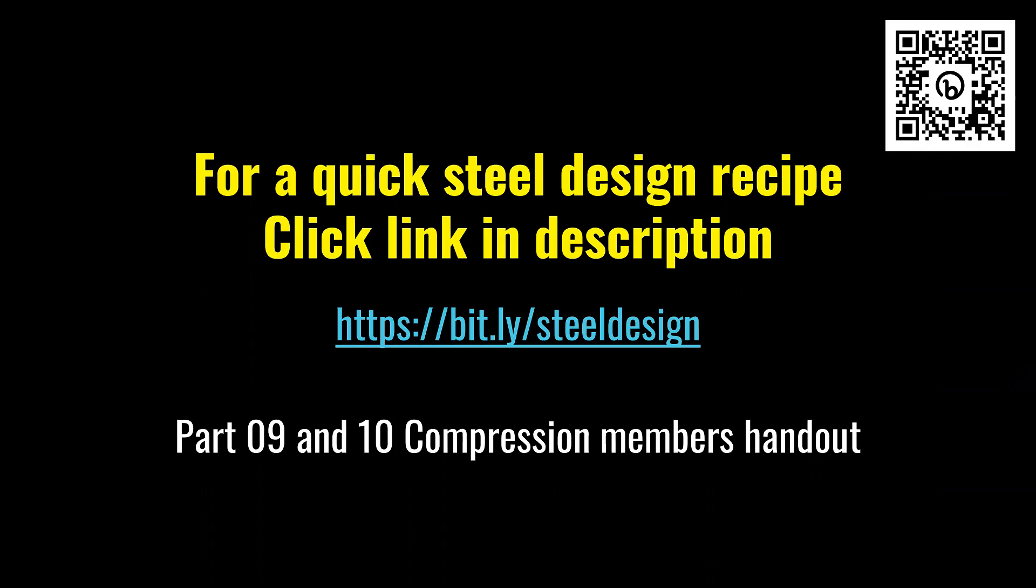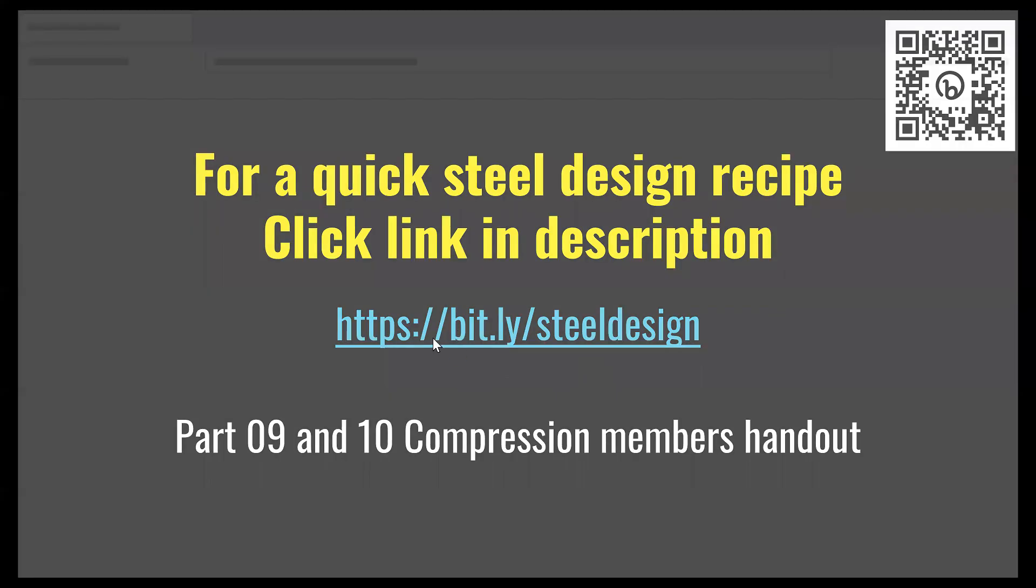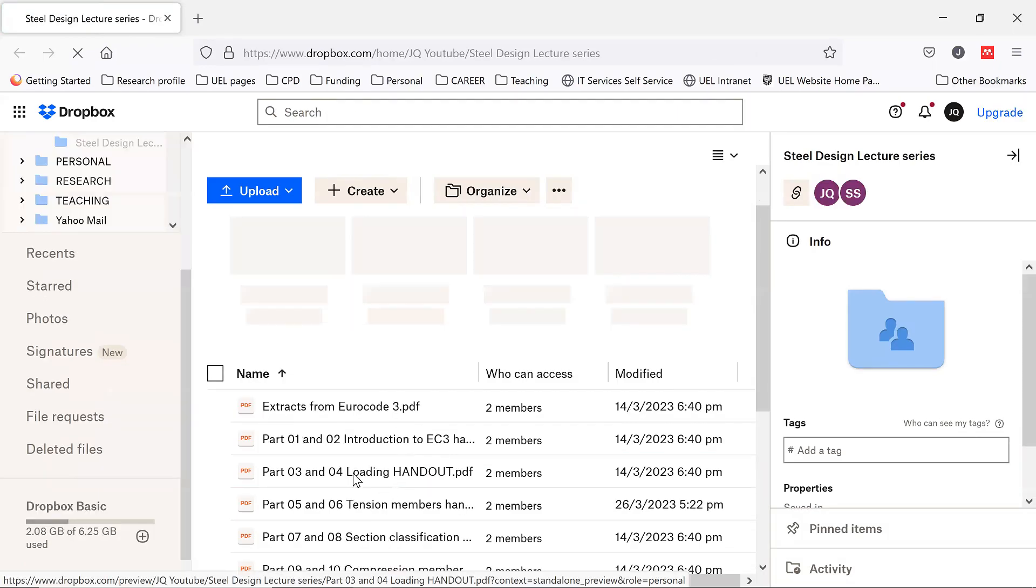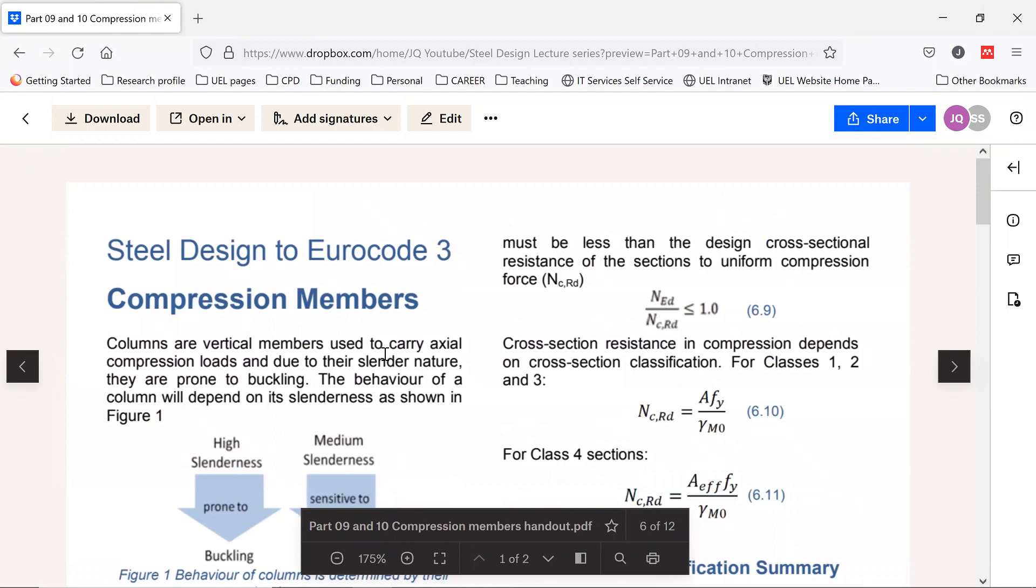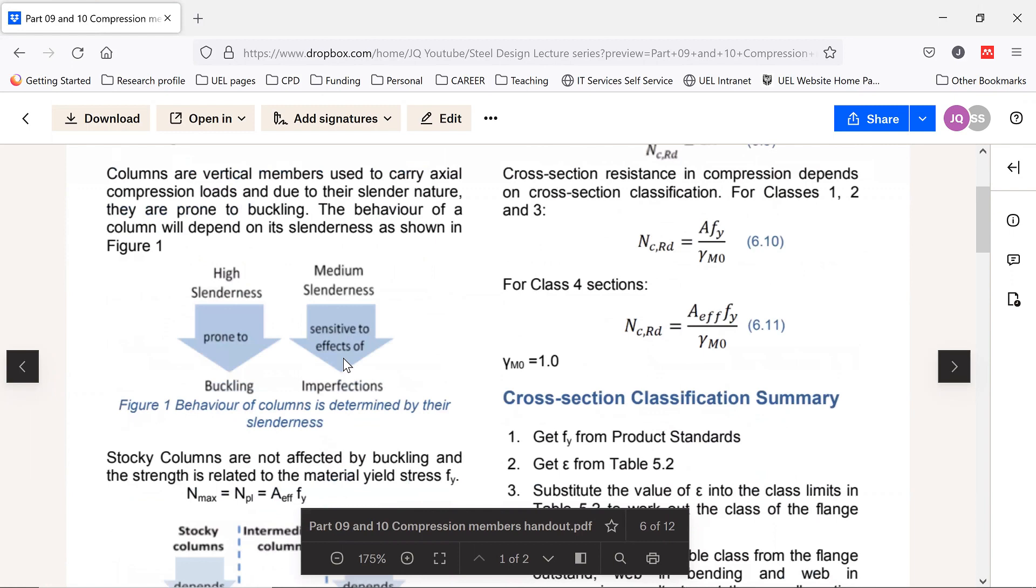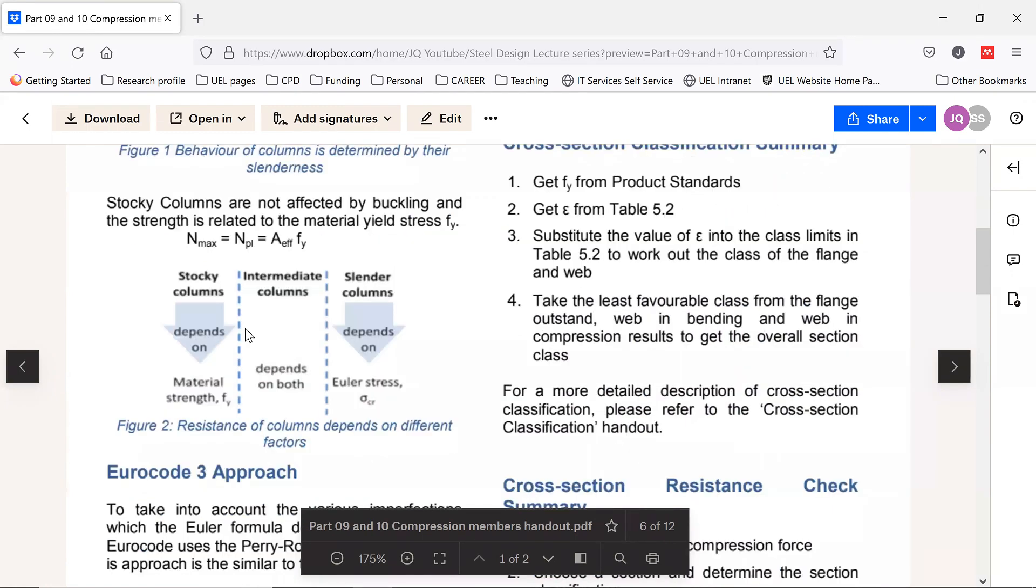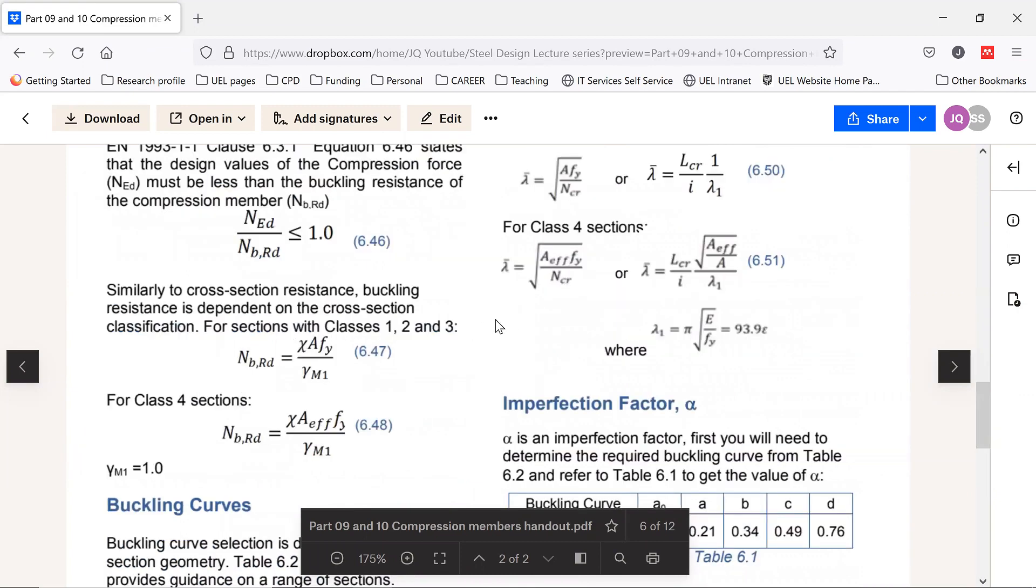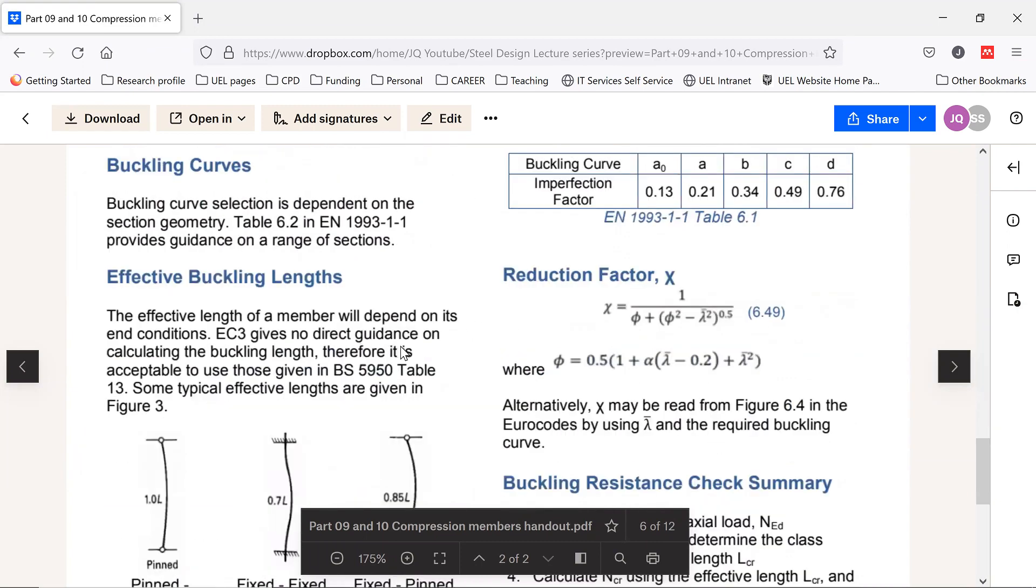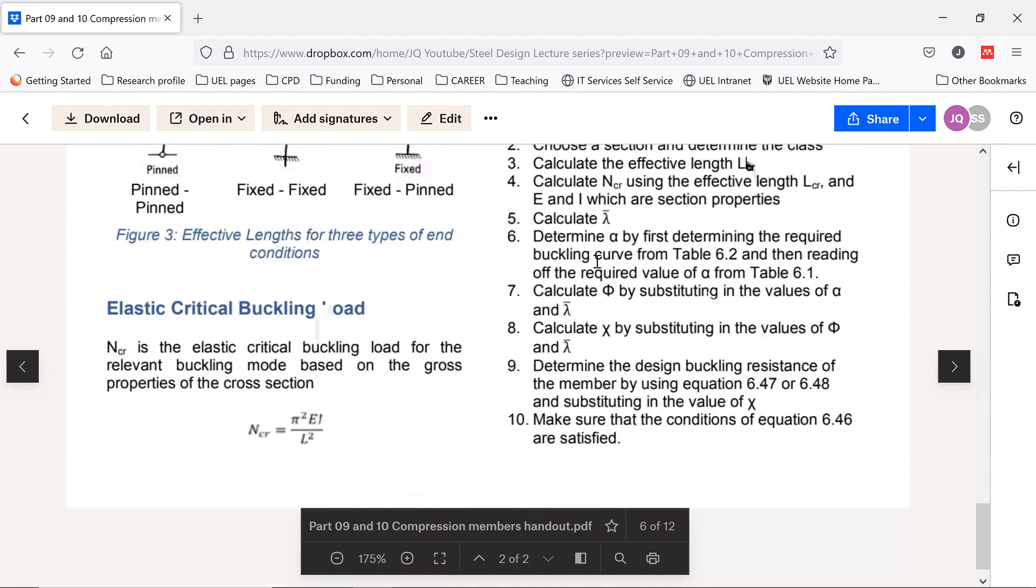You might be wondering how do I remember all these difficult formulas. For this there is a quick solution. If you click on this bit.ly slash steel design it will take you to a quick recipe for design of compression members. It's a two-page recipe, a design recipe where you have all the formulas which are given which I have used in this lecture starting from compression resistance to buckling resistance all the way to slenderness formula and imperfection buckling length and all the design steps.